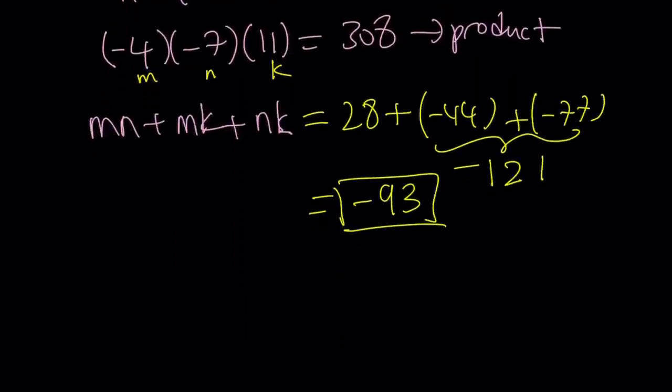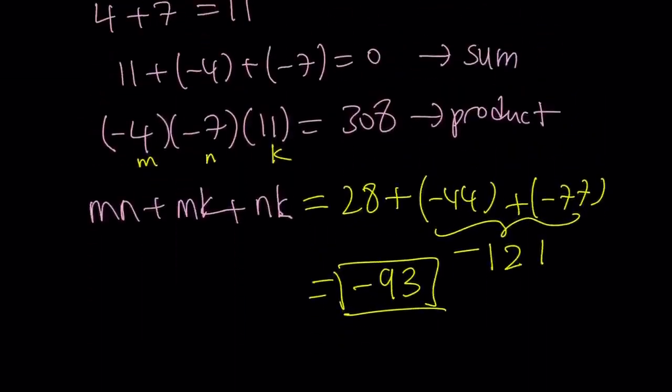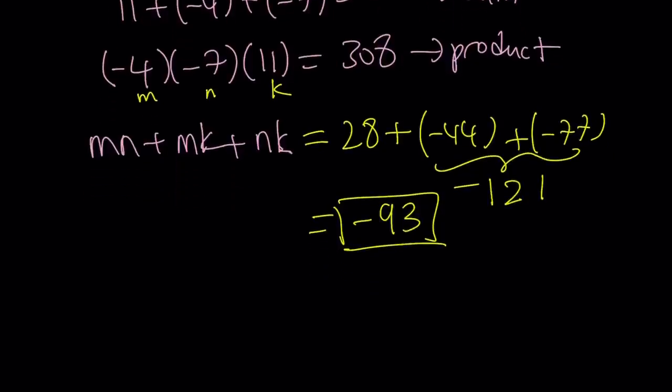Like, you don't have to search for, like, can we find non-integral? No. There's only three solutions. Remember, the theorem, something, I don't know what it's called right now. But anyways, so the solutions are negative 7, negative 4, and 11.